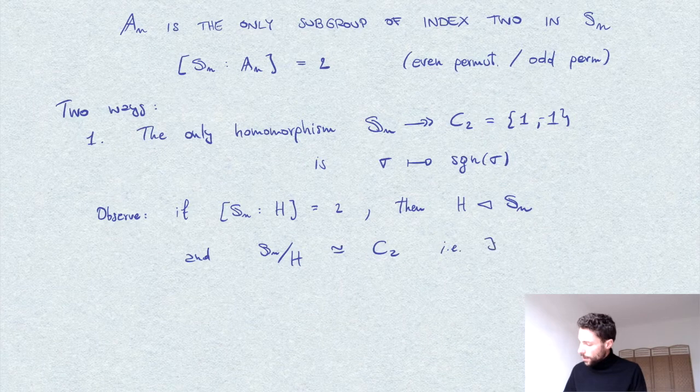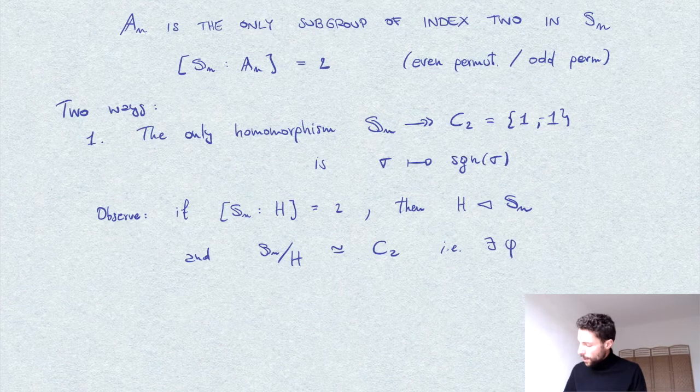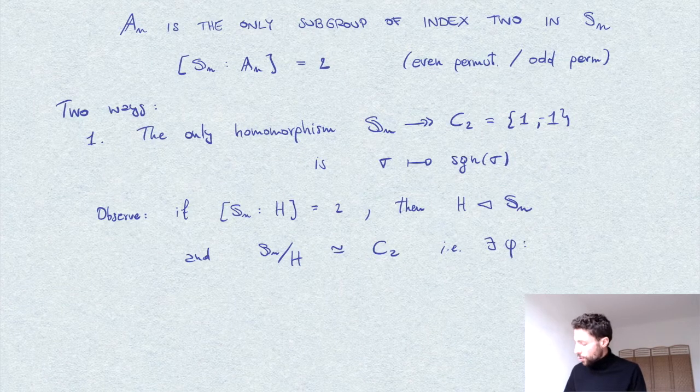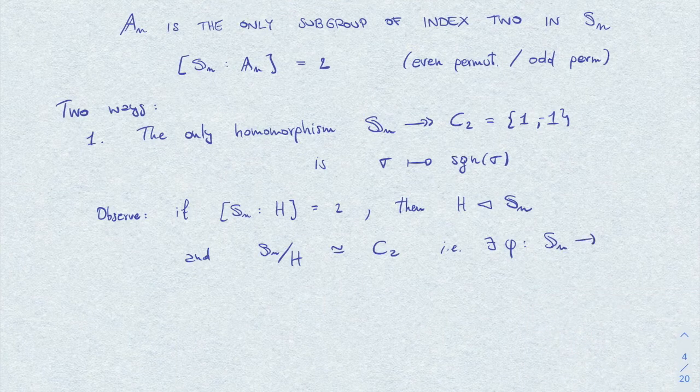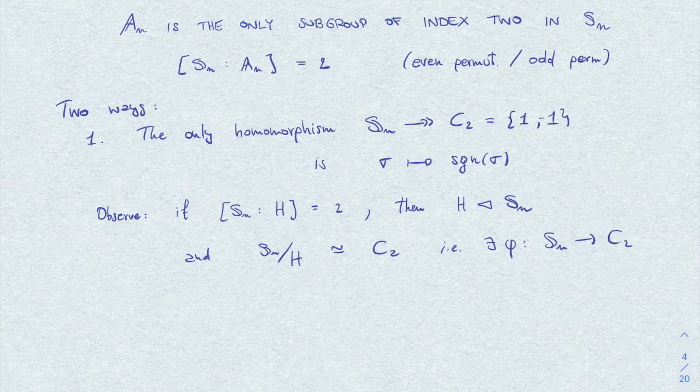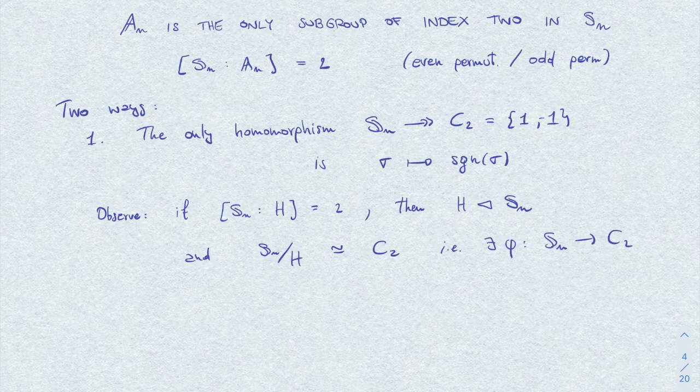And so another way to say this is that there exists a surjective morphism of groups from S_n to C_2 of which H is the kernel.